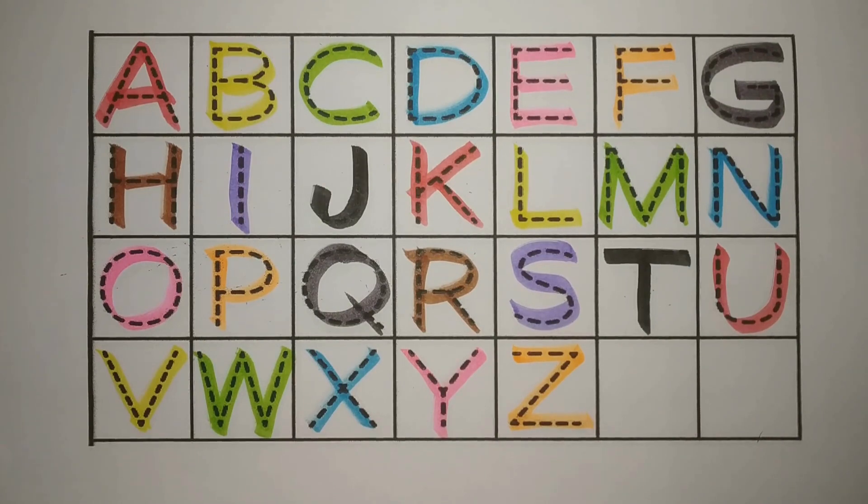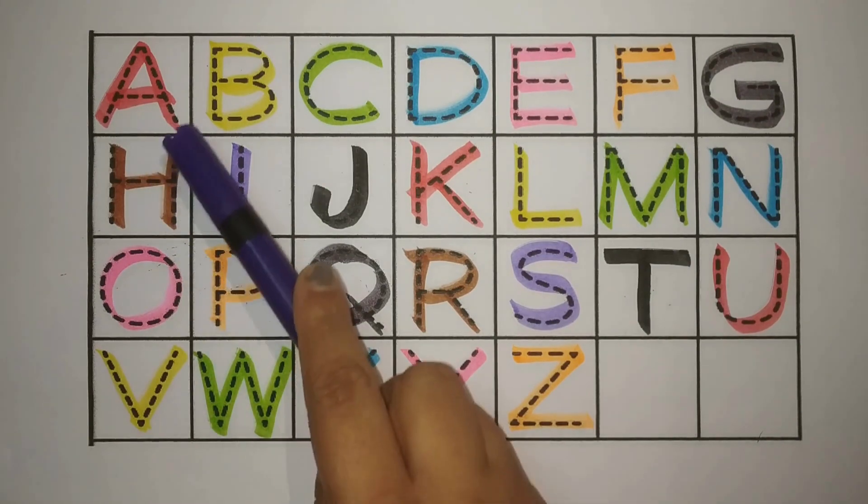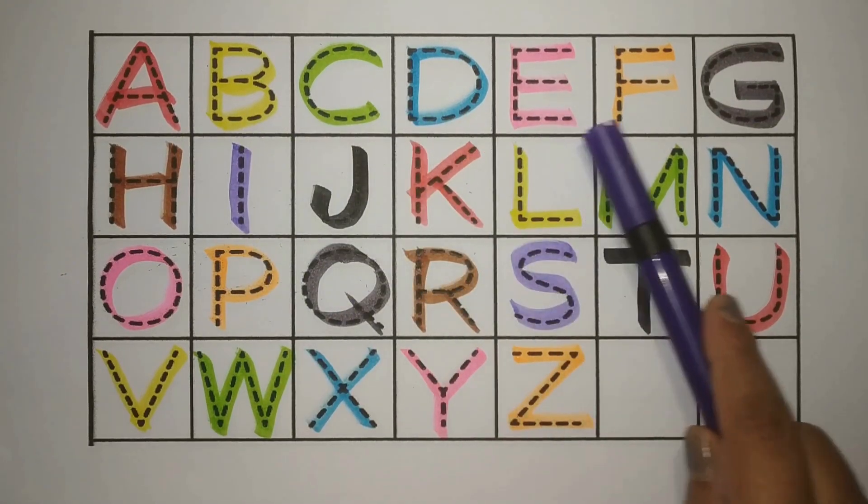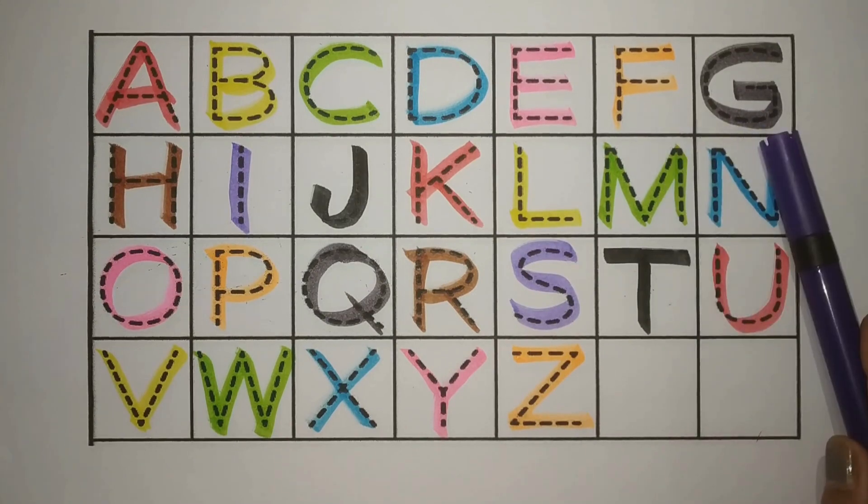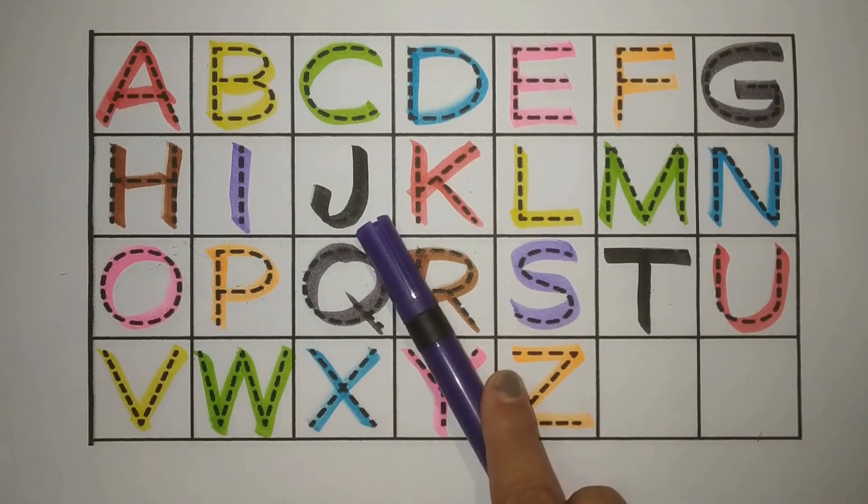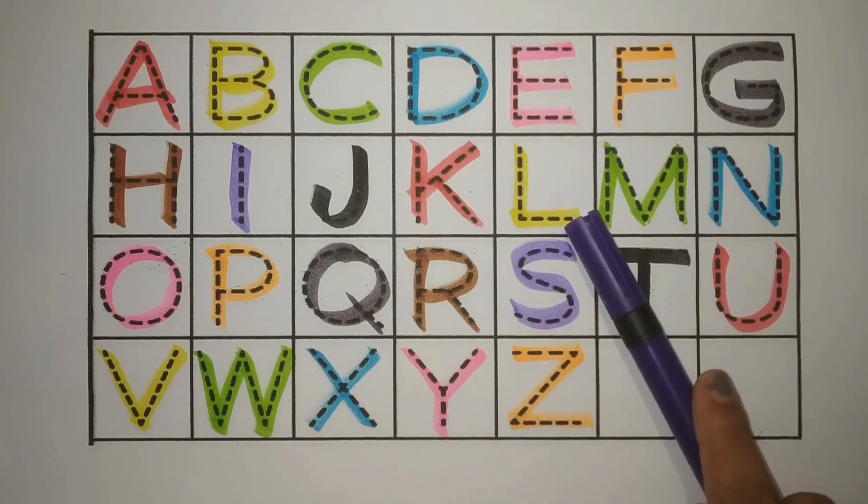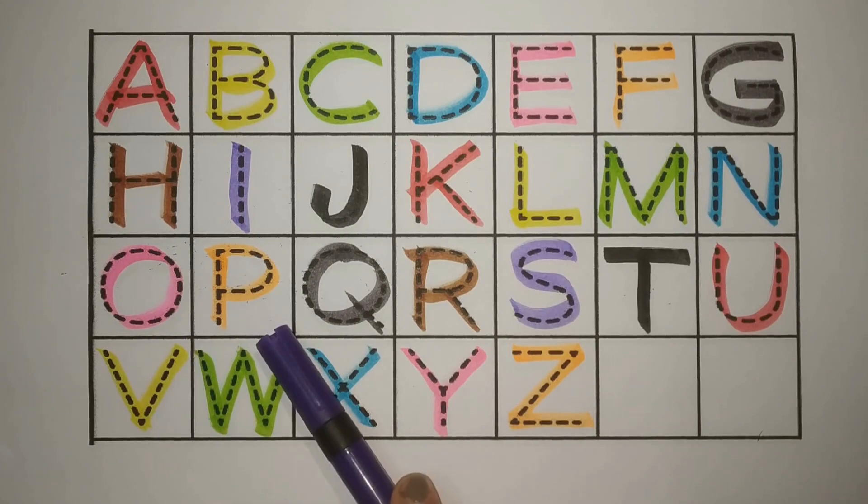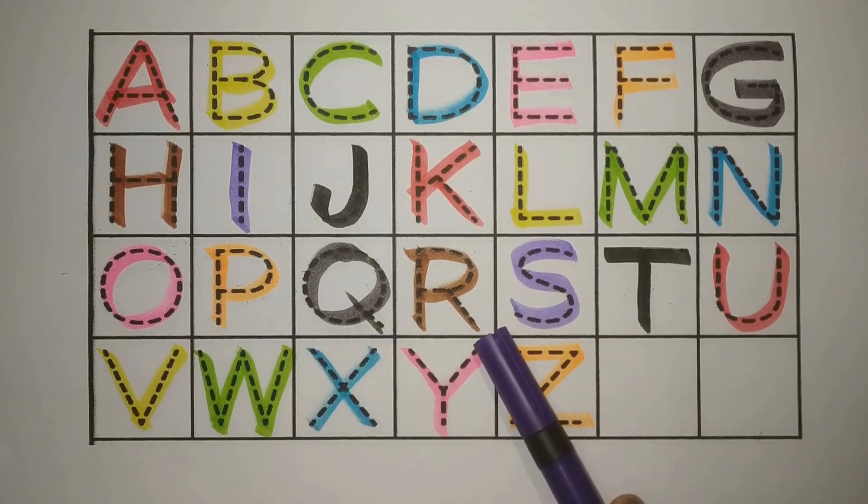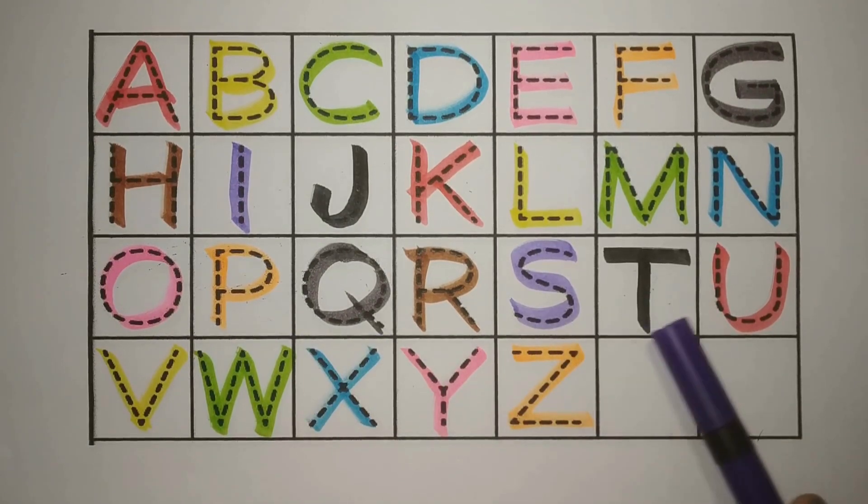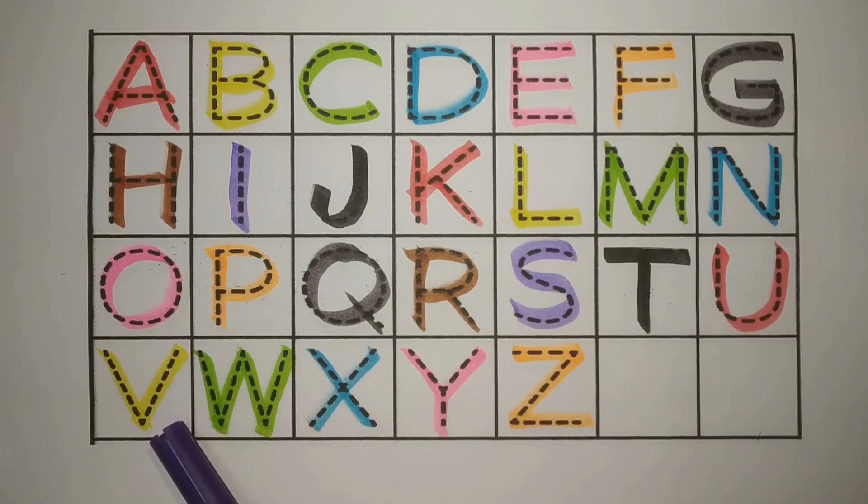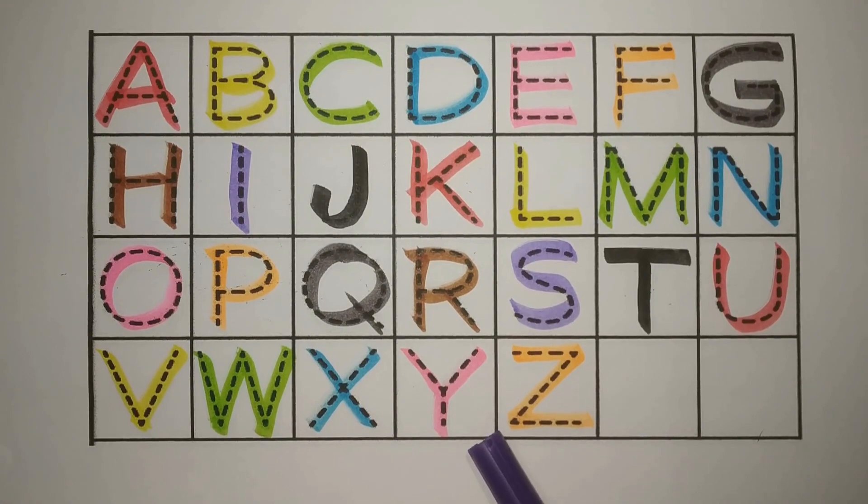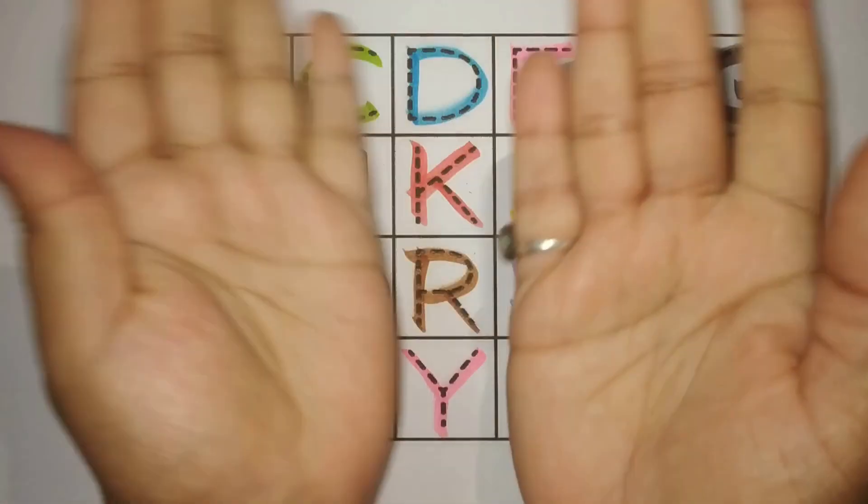Let's revise. Chalo phir se kerte hai. A red, B yellow, C green, D blue, E pink, F orange, G gray, H brown, I purple, J black, K red, L yellow, M green, N blue, O pink, P orange, Q gray, R brown, S purple, T black, U red, V yellow, W green, X blue, Y pink, and Z orange. Simple!